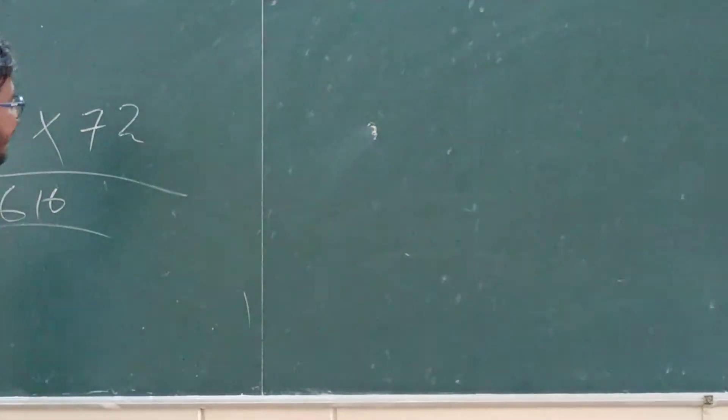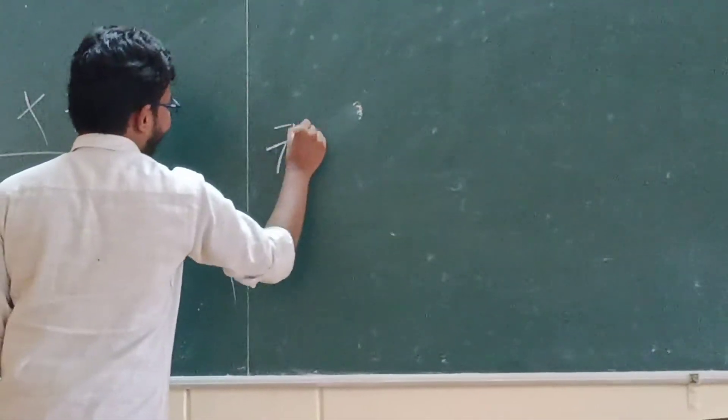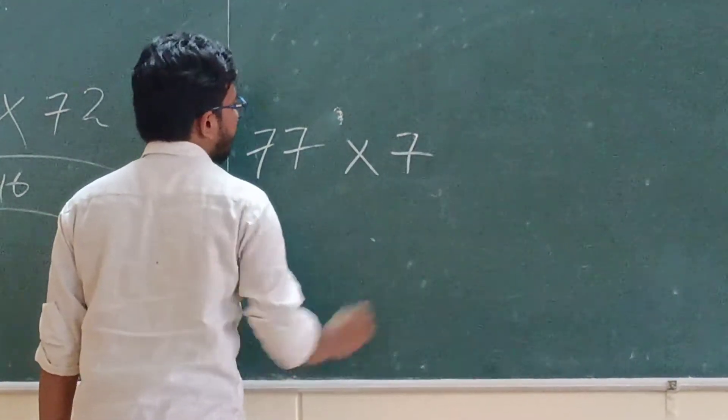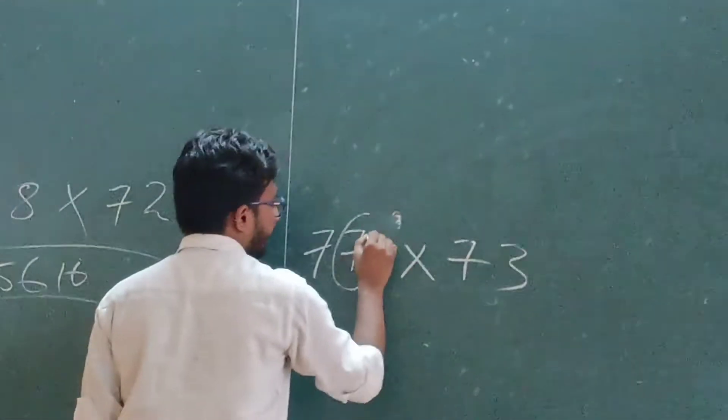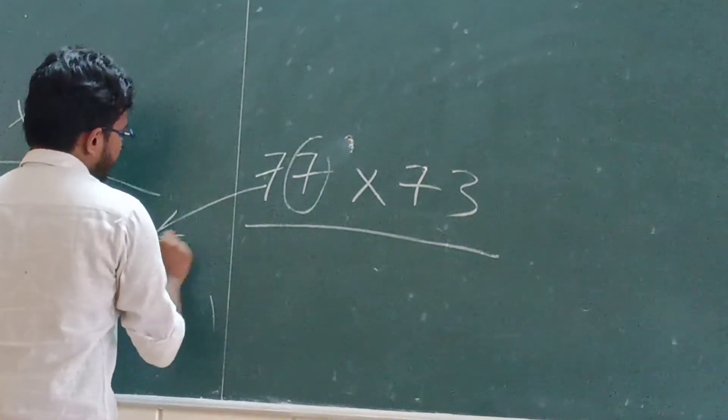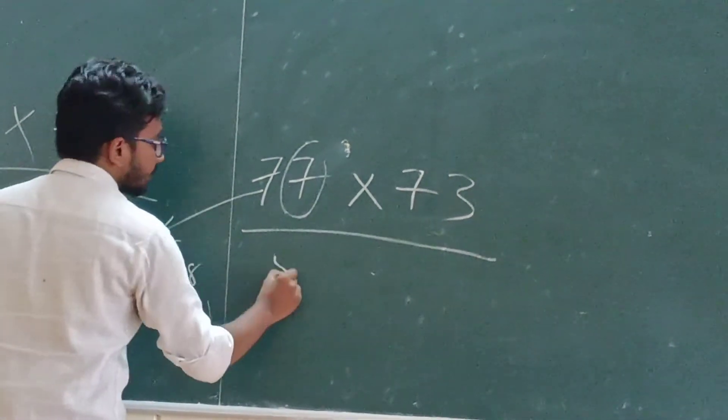So suppose, take seventy-seven. That is multiplied by seventy-three. Because, ten minus seven is three. And now, we have to multiply seven times eight. Fifty-six.